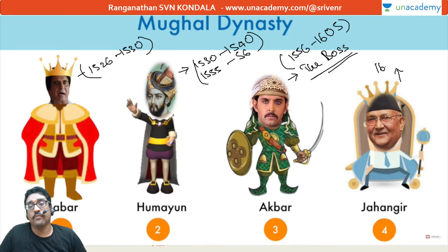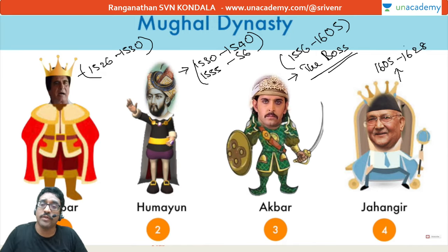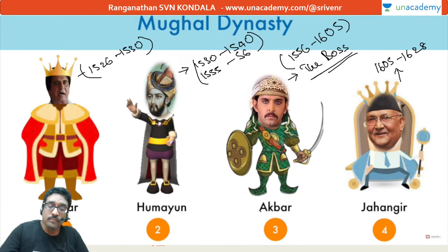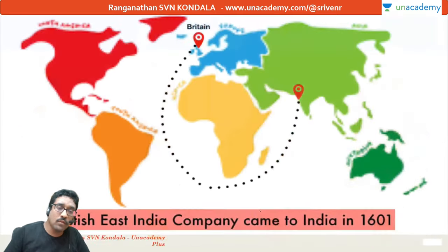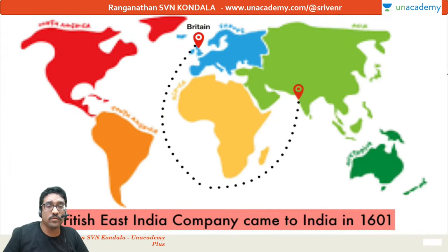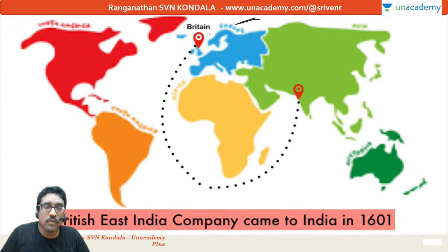Jahangir ruled from 1605 to 1628 - some books will say 1627. During this period, this place is what I call the 'Langur land.'